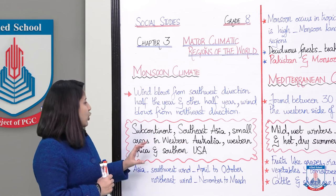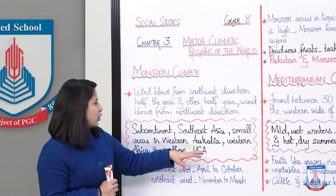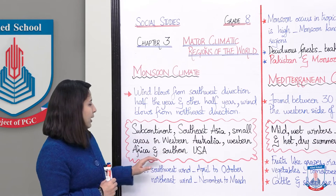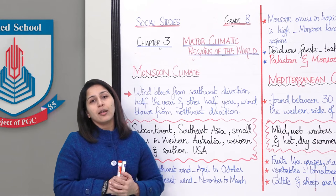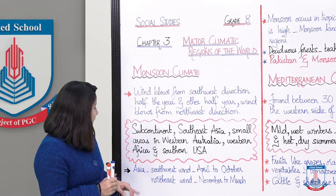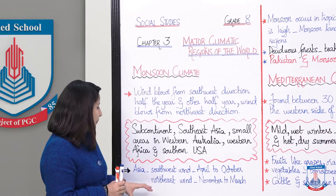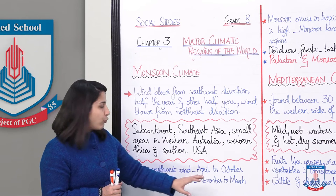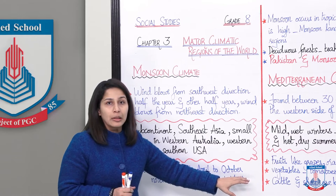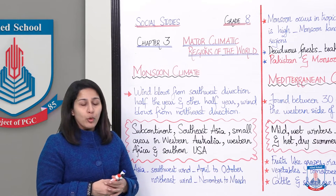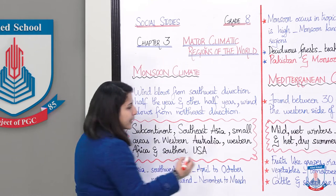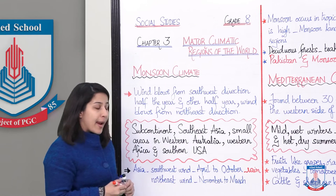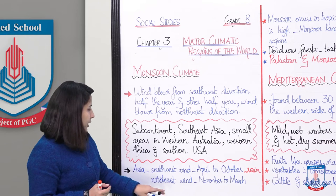Yeh climate majorly subcontinent mein, southeast Asia mein, small areas in western Australia, western Africa, aur southern USA mein paaya jaata hai. Asia mein jab southwest side se wind blow kerti hai, woh April to October blow kerti hai, aur April to October jab woh blow kerti hai toh it carries majorly rain with it.